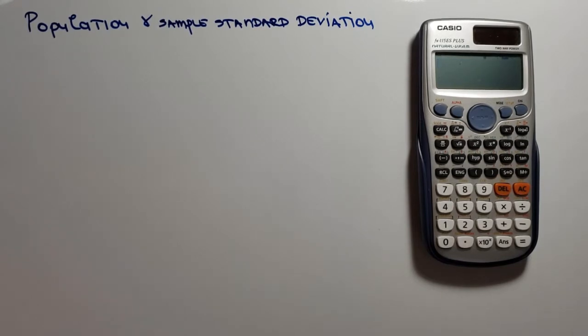In statistics, a population is a collection of people, items, or events about which you want to make inferences. A sample is a subset of people, items, or events from a larger population that you collect and analyze to make inferences.